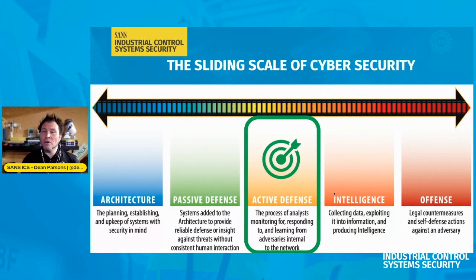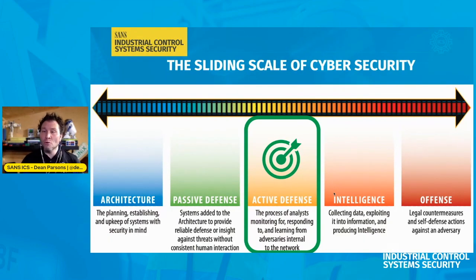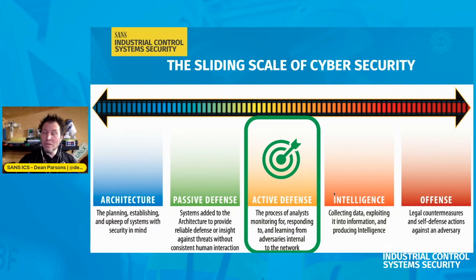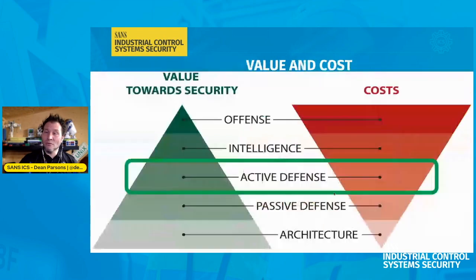Now in general, where should you be today? We're really hoping you're in the active defense area of the sliding scale. This is really where we should be today based on the threat landscape — the process of analysts monitoring for, responding to, and learning from adversaries and threats internal to your industrial control network. The keyword here again is analysts — people, humans — looking at the network and responding as a result of findings, or making proactive changes to reduce incidents in the first place.